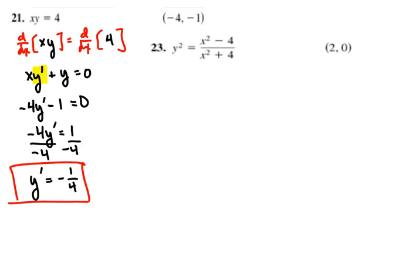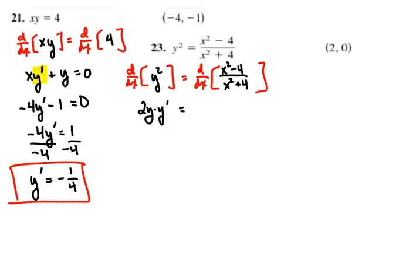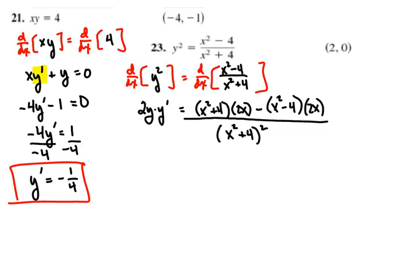We want the derivative of both sides with respect to x. On the left side, we're taking the derivative with respect to x. We have y's there, so we're going to have to multiply by y prime when we're done. 2y, y prime on the left. On the right side, we do have a quotient rule. Low, which is x squared plus 4, d high, the derivative of the numerator, is just 2x. Minus high, x squared minus 4. D low, the derivative of the denominator, is also 2x. Over low squared.